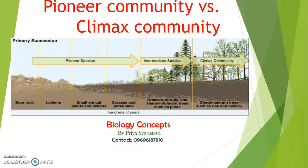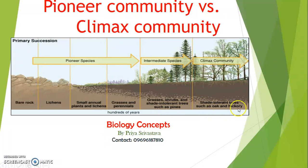So primary succession begins with bare rock, then lichens, then small annual plants and lichens, then grasses and perennials, then shrubs and shade-intolerant trees such as pines, and finally shade-tolerant trees such as oak and hickory.